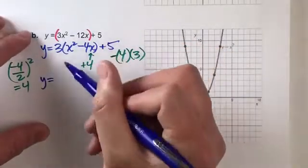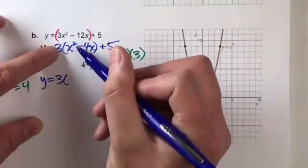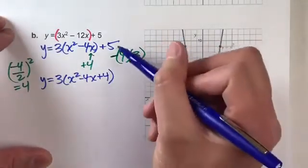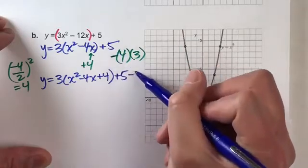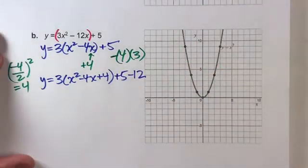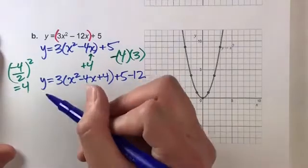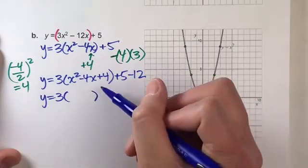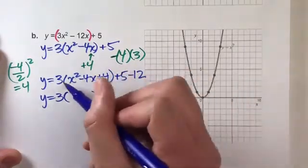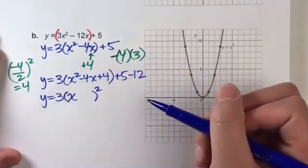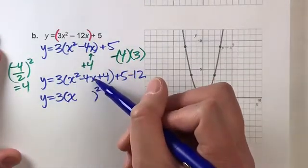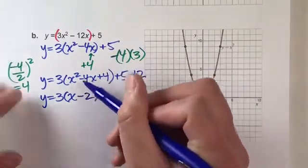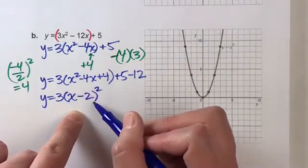So let's see what ends up happening. I've got that 3 times all this stuff, x squared minus 4x, and the plus 4. And on the outside, I have plus 5 and minus 12. Now, the whole reason we added the 4 in the parentheses is so we could complete the square. So what perfect square is this? We know there's an x here. And the term next to the regular x here is a negative 4. So if I divide that by 2, I get negative 2. So I know this factors as x minus 2 squared.